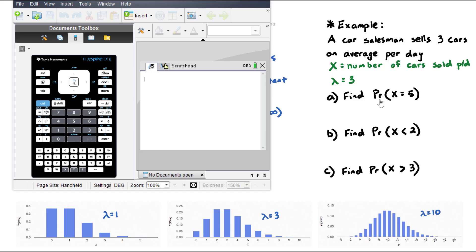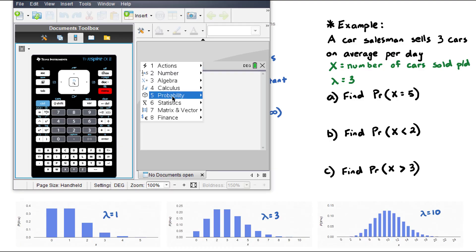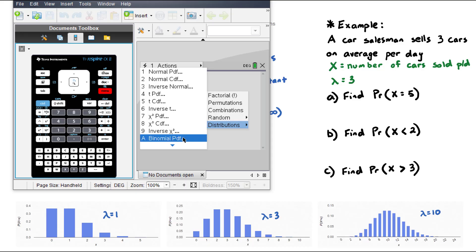Part A asks us to find the probability that this salesman sells exactly five cars. We can find that by going menu, probability, distributions, and we go all the way down. We have our two Poisson commands here right down the bottom. The first one is Poisson PDF, click that.